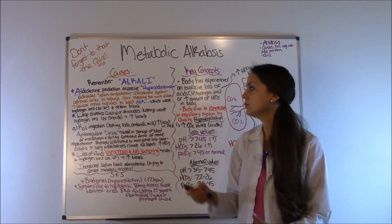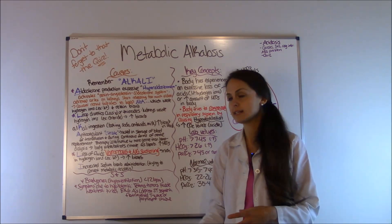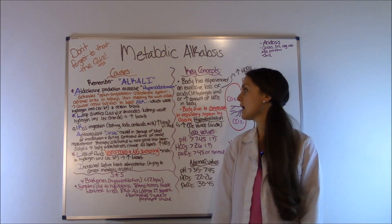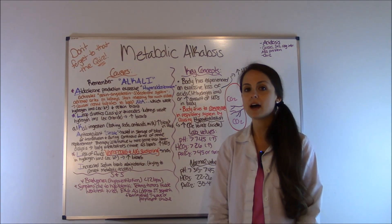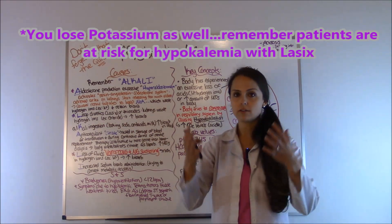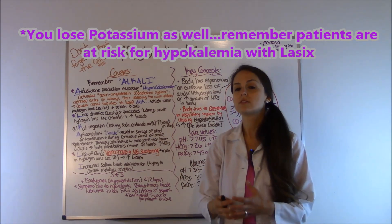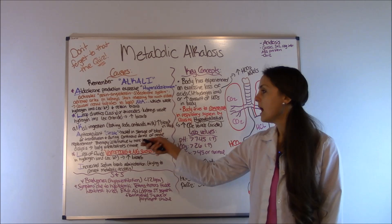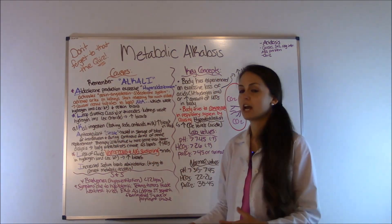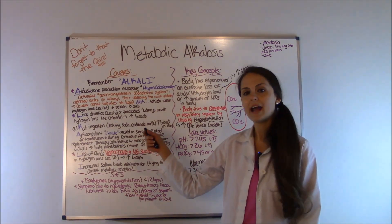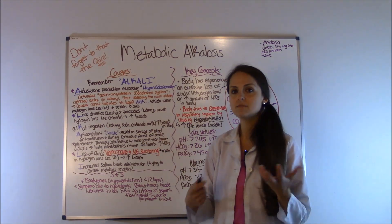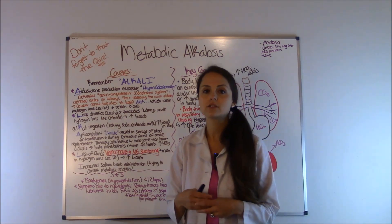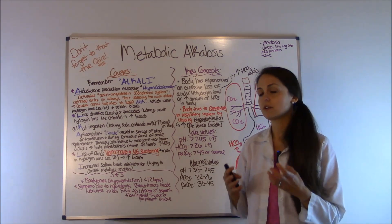K stands for alkali ingestion — patients who've consumed too many alkalotic foods or substances like baking soda, antacids, or milk. Taking in way too much of those causes the bloodstream to become very alkalotic because those substances are alkalotic themselves. A stands for the anticoagulant citrate, which is used in blood storage bags for transfusion. If a patient gets a massive blood transfusion, they're at risk because the body metabolizes citrate as bicarb.